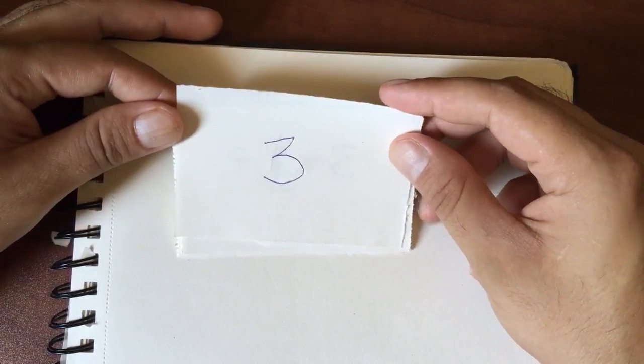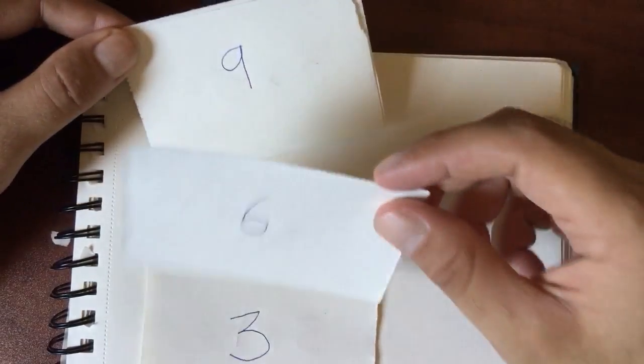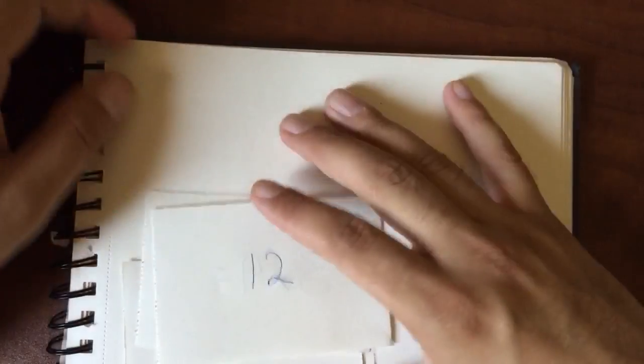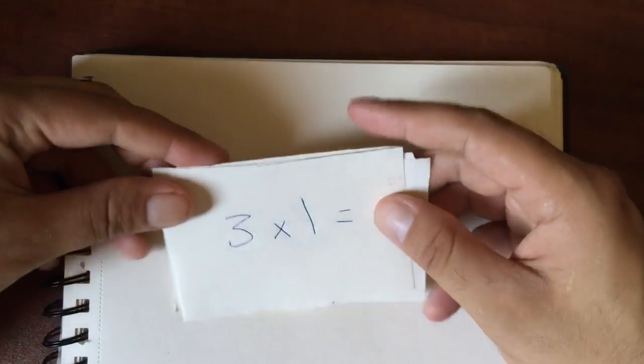So a good way for you to practice is to focus on a single number first, and you can go 3, 6, 9, 12. And you're going to see it's the same numbers that we were skip counting, and you can write them out as flashcards.